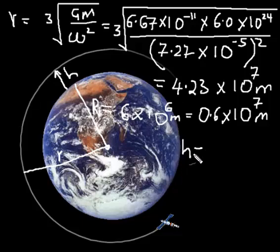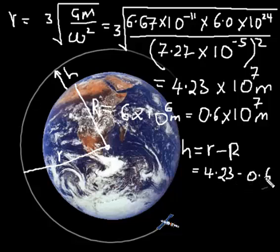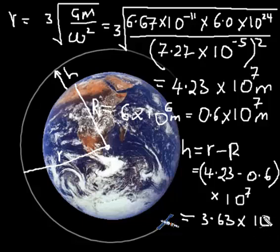h is equal to the radius of the geostationary orbit minus the radius of the Earth. Because the two numbers have got the same power, all I need is just find the difference between these two: 4.23 minus 0.6, all this by 10 raised to power 7. The answer to this is 3.63 by 10 raised to power 7 meters.